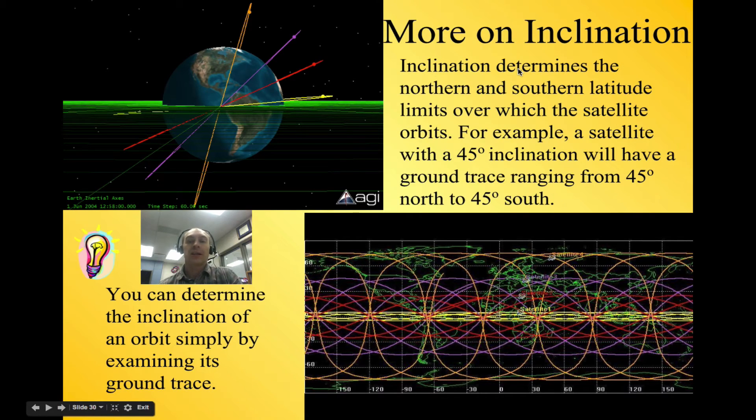So a little more on inclination. Inclination determines the northern and southern latitude limits over which the satellite orbits. For example, a satellite with an inclination of 45 degrees will have a ground trace ranging from 45 degrees north to 45 degrees south. That's pretty nice and convenient. So you see our purple inclination right here has an inclination of 45 degrees. And the orange one, which goes way up here, it's like an 85 degree angle or 75 degree angle maybe, goes up to here. So whatever the angle of inclination is, that also shows you the maximum and minimum range for the ground trace.